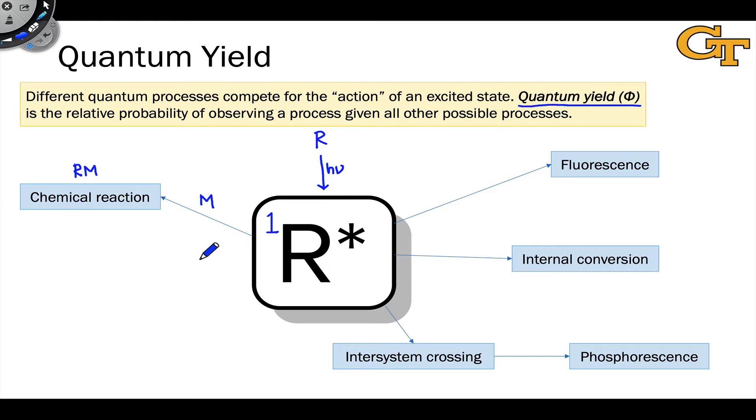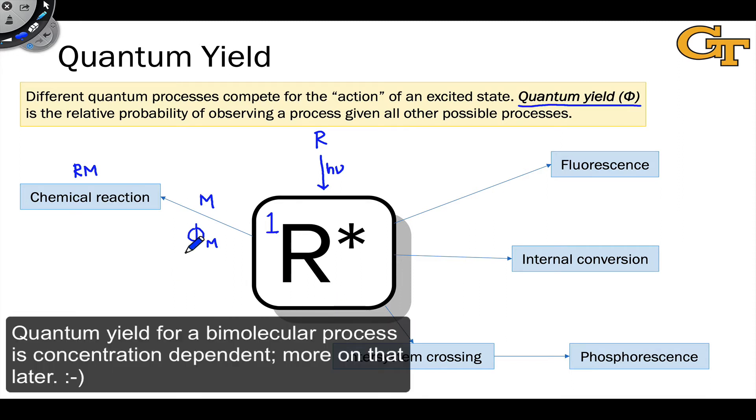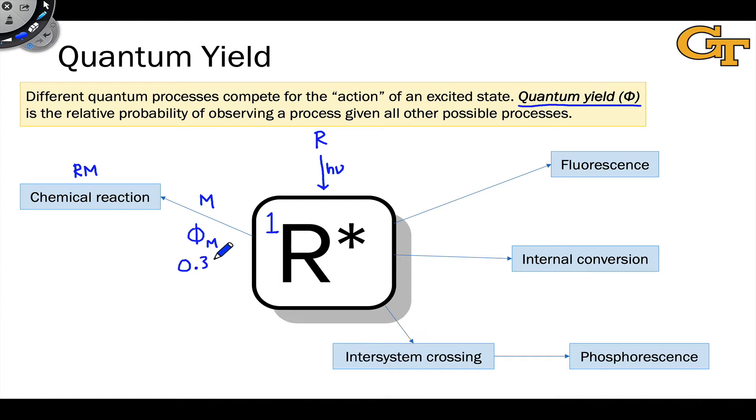That probability is the quantum yield. So let's say that these are the only four possible things that can happen under the conditions that we set up for the generation of R star in this solution. Each one has a quantum yield which we represent with a capital phi. So we have phi M, for example, could be the quantum yield of chemical reaction. And let's just throw a number down here, something like 0.35 maybe is the quantum yield of chemical reaction.